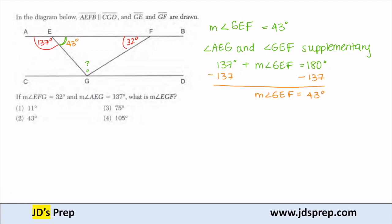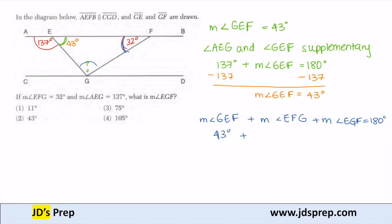The second thing we know is the measures of the angles in my triangle also add up to 180 degrees. So the measure of GEF, which we just found, plus the measure of EFG, also in my triangle, plus the measure of EGF equals 180 degrees, because it's a triangle. GEF we just found is 43 degrees, and EFG — that was given — that's 32 degrees.